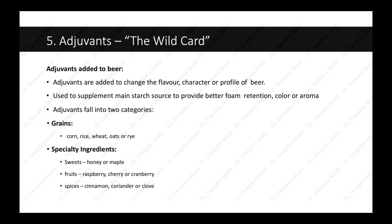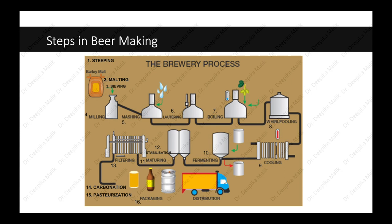The next ingredient is adjuvants. Adjuvants are added to change the flavor, character, or profile of beer. They are used to supplement the main starch source and to provide better foam retention, color, or aroma. Adjuvants fall into two categories: grains such as corn, rice, wheat, oats, or rye; and special ingredients like sweets, honey, or maple, fruits like raspberry, cherry, or cranberry, or spices like cinnamon, coriander, or clove.